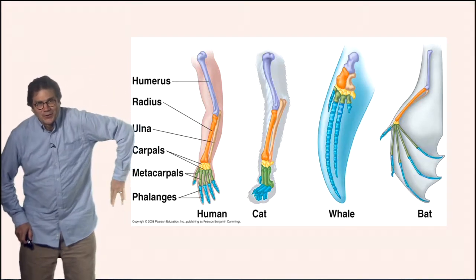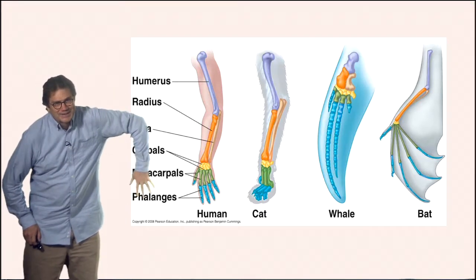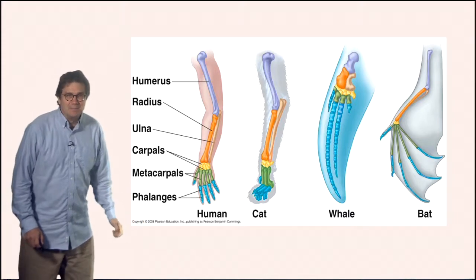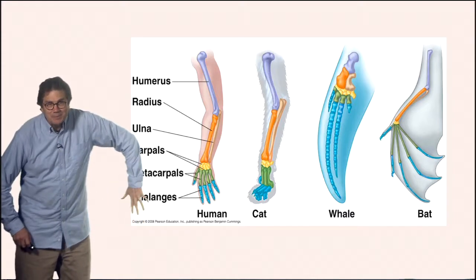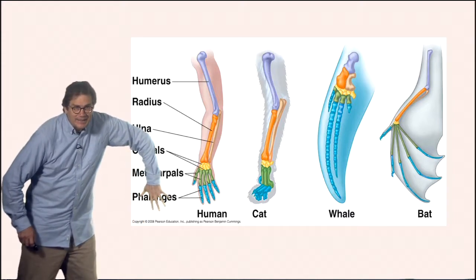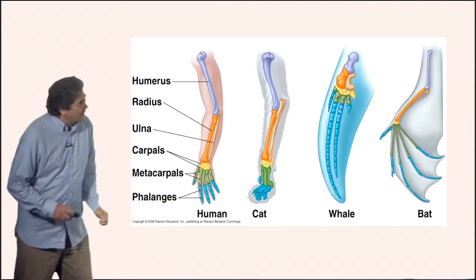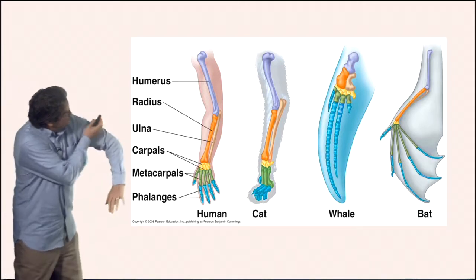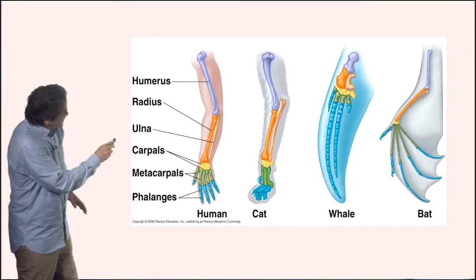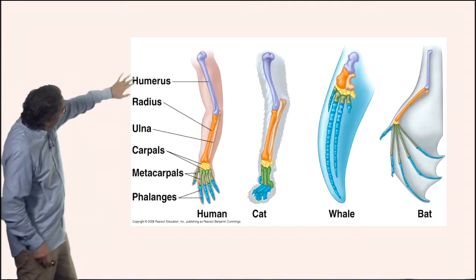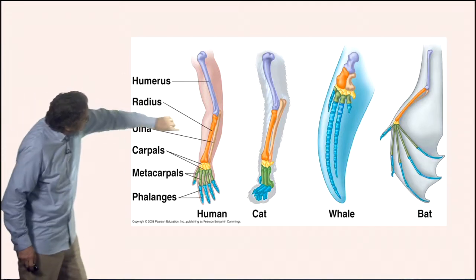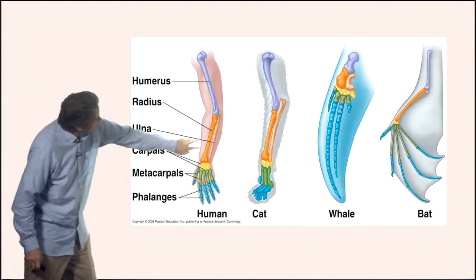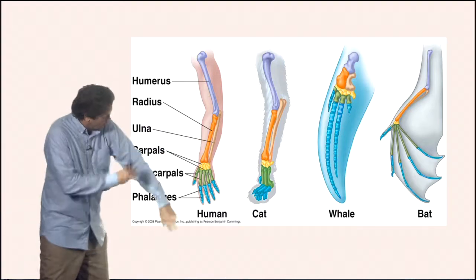Greetings Earthlings. Let's look at these limbs. That's a human limb. Now inside of a limb we have a humerus here, a radius here, and an ulna here. These are two bones here, one bone here.